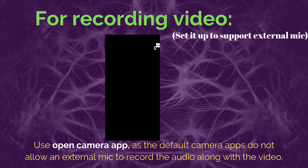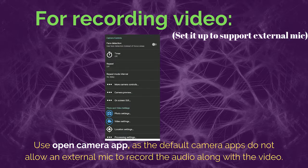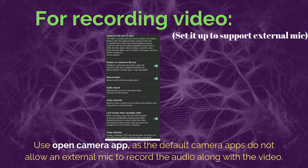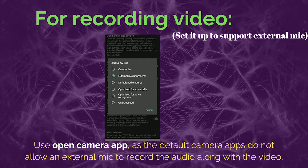To use the Open Camera app with your smartphone, first go to Settings, then go to Video Settings. Scroll down and you will see an option which says Audio Source — click on that. Once you have clicked on the Audio Source option, make sure that the option which says 'External Mic if present' is checked. This option will make the Open Camera app recognize the external microphone.